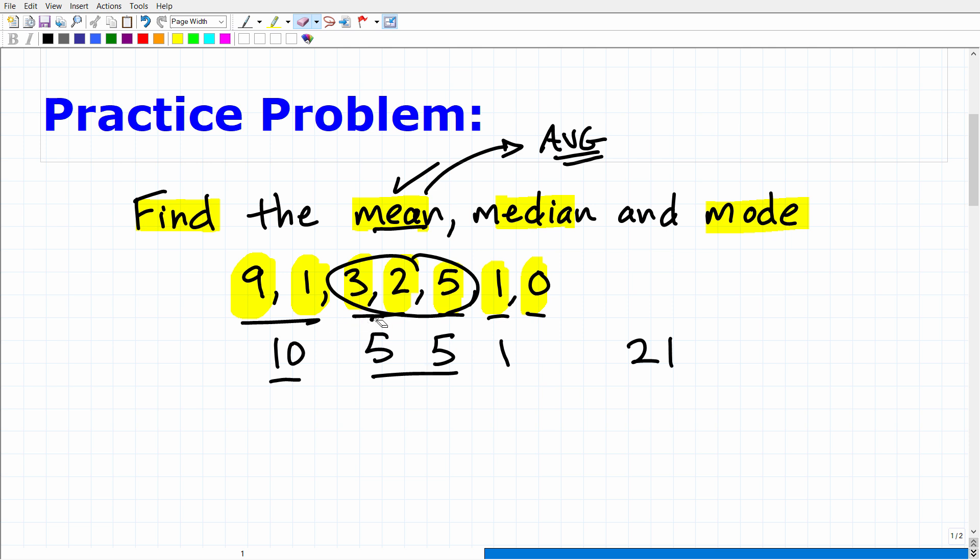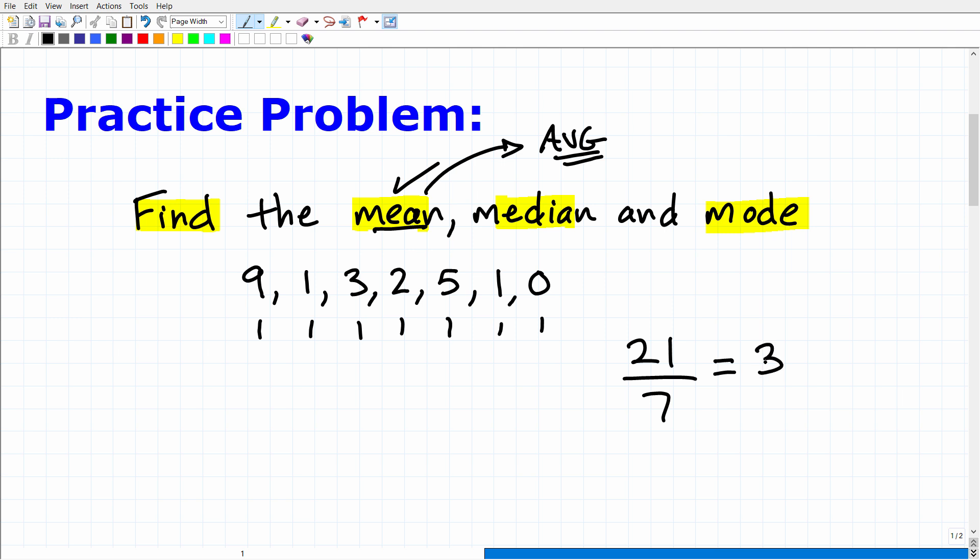Now, how many numbers do we have? Let me go and erase all this. It looks like we have 7. But it's always good to double-check. You don't want to be guessing. 1, 2, 3, 4, 5, 6, 7. So we have 21 divided by 7. This is how we find the mean or the average. And, of course, that is 3. All right. So let's put that over here. The mean is equal to 3. And if you got that right, that's excellent.